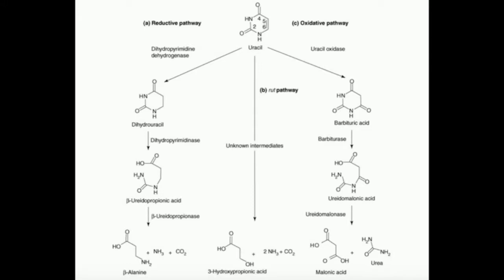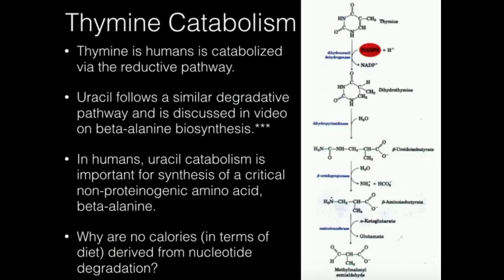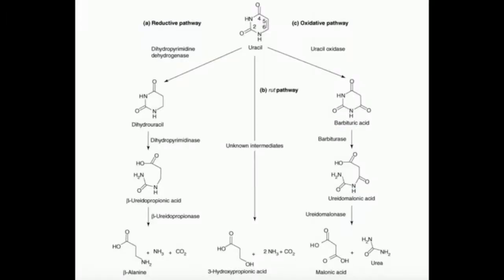For the reductive pathway, which is the human pathway, uracil will react with dihydropyrimidine dehydrogenase. This enzyme is the same as dihydrouracil dehydrogenase shown here, it's just a different naming system, but they're the same enzyme. Electrons from NADPH are going to reduce this double bond right here. You notice in dihydrouracil, that bond is gone.